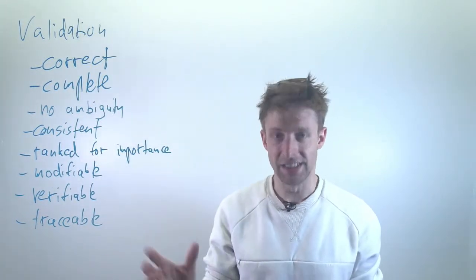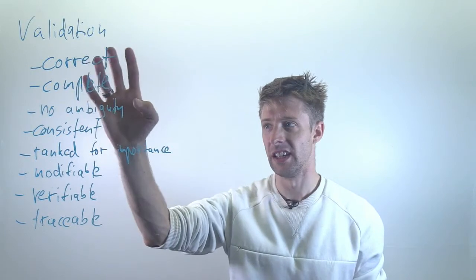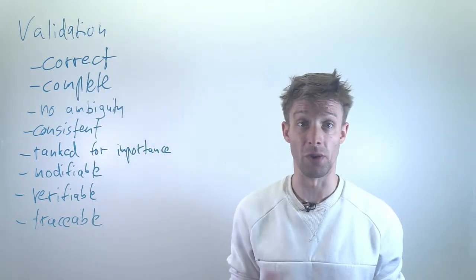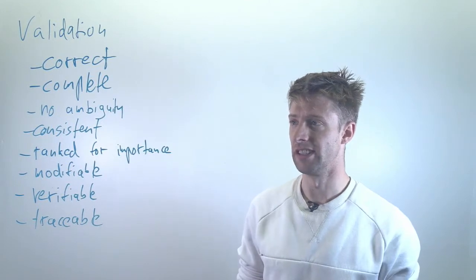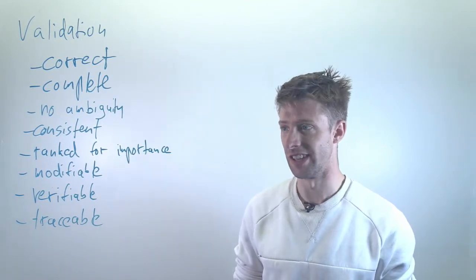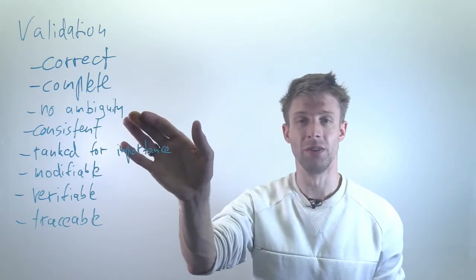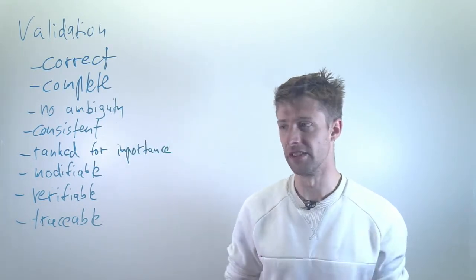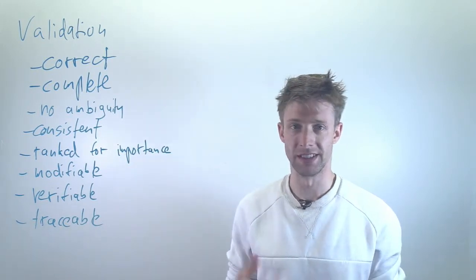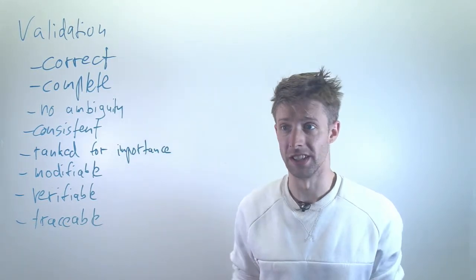This sounds difficult and it is difficult. It is in practice hard, if not impossible, to achieve all of these. For instance, making sure that you have all relevant stakeholder needs is probably one of the hardest things in software engineering to decide. Similarly, if you use natural language, it's really hard to get rid of ambiguity and so on. But some things like ranking for importance should be fairly straightforward if you think about it.